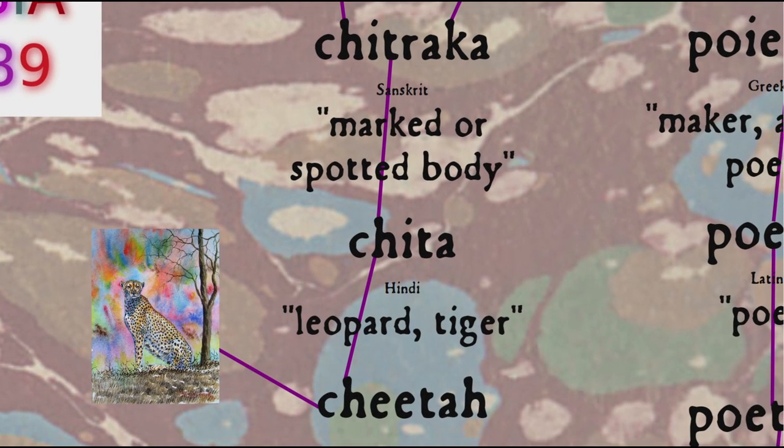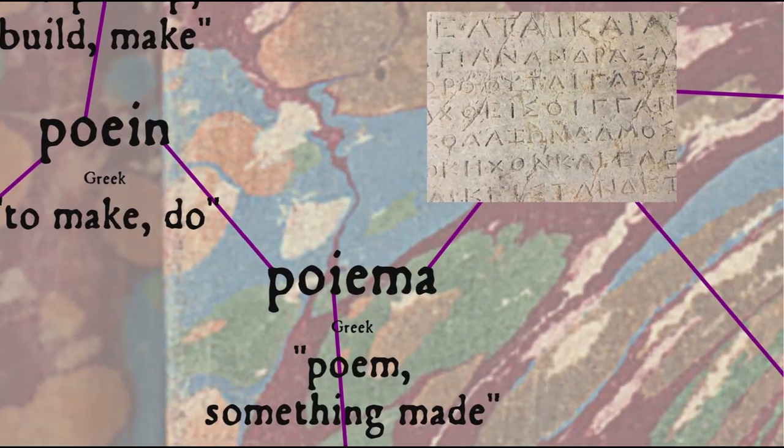But in the Greek version, poiema, a poem is literally a thing that's made, and that makes sense when we look at a few of the historical definitions of poetry.